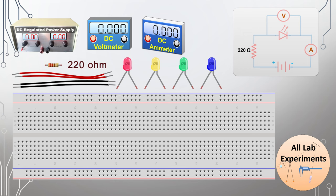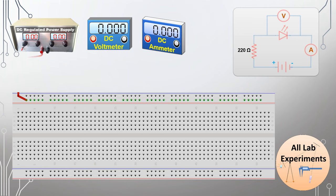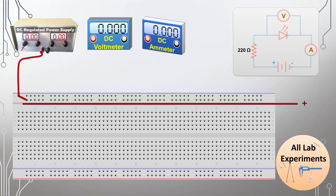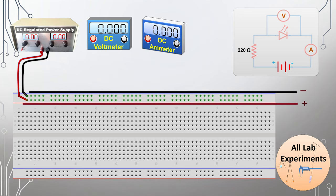We will make this circuit to perform the experiment. In the beginning, we connect the positive terminal of our power supply to a horizontal line on the breadboard, and then connect the negative terminal of the power supply to another horizontal line on the breadboard.